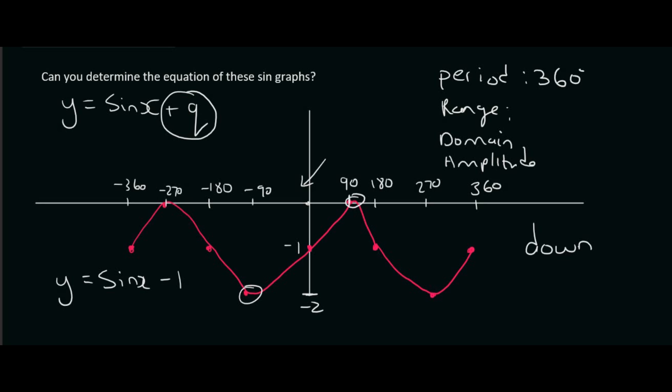The range is the y value. So we say y є. Now the lowest value is minus 2, and the highest value is 0. So we can say it goes from minus 2 up to 0. The domain is the x values, and that you just need to look at what they've given you. Well, they've gone from minus 360 up to 360, like that.